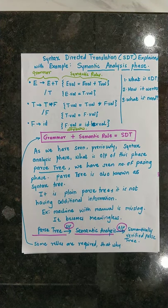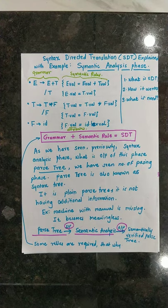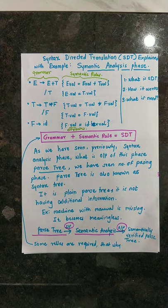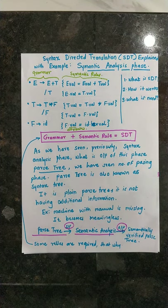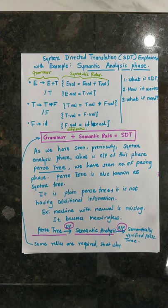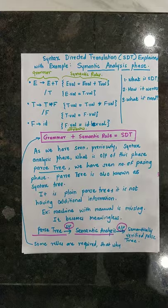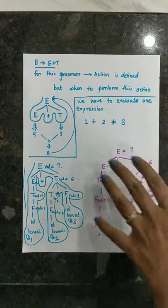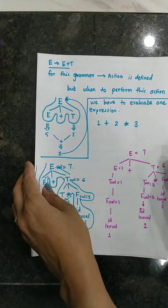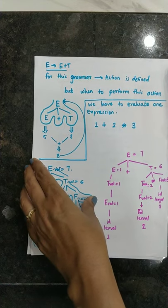Semantic analysis is an important phase. If we generate a parse tree but have no information regarding that parse tree, it is meaningless and we cannot work further on it. That is why semantic analysis is important — grammar is augmented with semantic rules to get the Syntax Directed Translation. In this video, we will see a simple example: E plus T is a production rule for this grammar, and an action is defined for it.